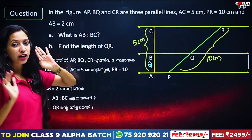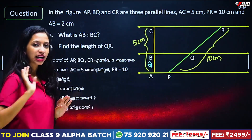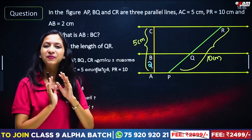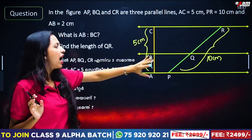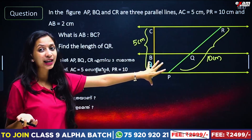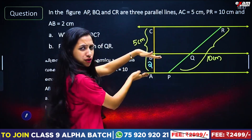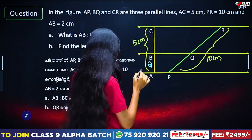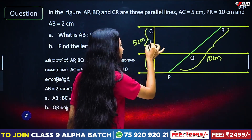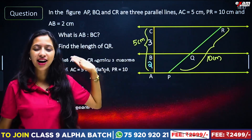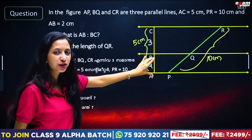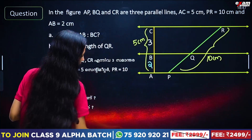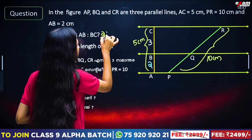First question: what is AB to BC? If AB is 2 cm and the total is 5 cm, then BC is 3 cm. So the ratio AB to BC is 2 to 3.